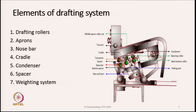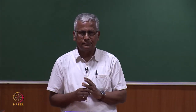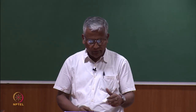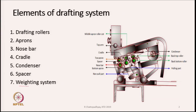Aprons, nose bar, cradle, condenser, and spacers do not exist in the draw frame drafting unit. There it is very simple — only a few pairs of rollers. But here, in addition to rollers, we have aprons, nose bar, cradle, condenser, and spacer. The weighting mechanism is common to both, because the rollers have to be compressed against each other so that the drive from the bottom rollers is transmitted to the fibers.